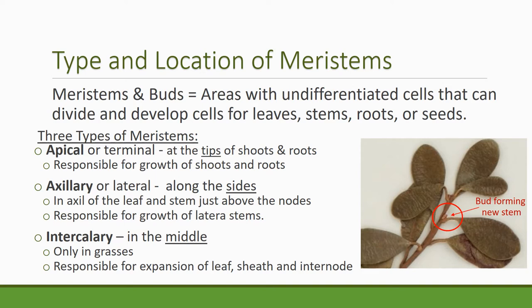There's also one at the tip of the roots that extends roots down into the soil. There are also axillary or lateral buds. Lateral buds increase the girth of the plant — they're on the sides, in the axils of leaves and stems, just above the node. They're responsible for growth of lateral stems and roots. Intercalary meristems — intercalary means in the middle — so they're in the middle, and they're only found on grasses.